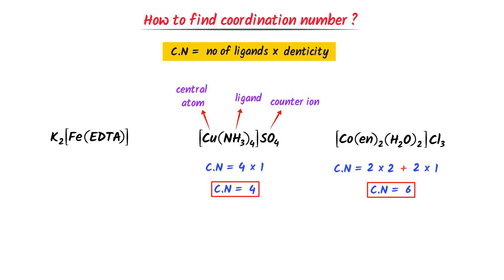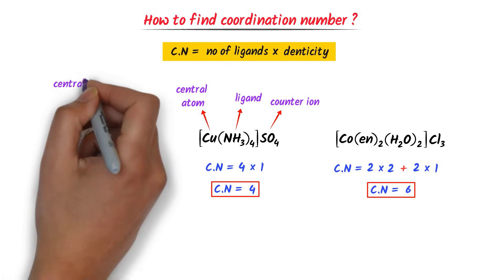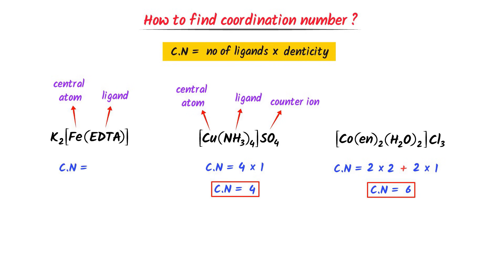Consider this last complex compound. EDTA is the ligand and iron is the central metal atom. There is only one EDTA ligand and its denticity is six, so the coordination number is 1 × 6 = 6. Using this simple technique, we can easily find the coordination number of any complex compound.